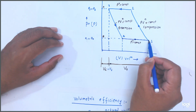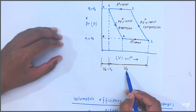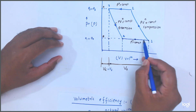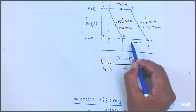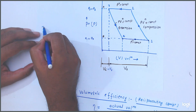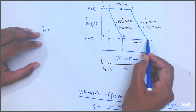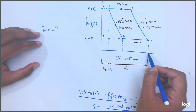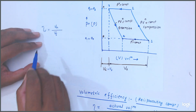This V1 — V1 minus V4 is the actual volume. And what will the theoretical volume be? The stroke volume or swept volume is the theoretical volume, but in actual case only this much volume is coming into the cylinder. So volumetric efficiency is actual volume upon stroke volume or swept volume.